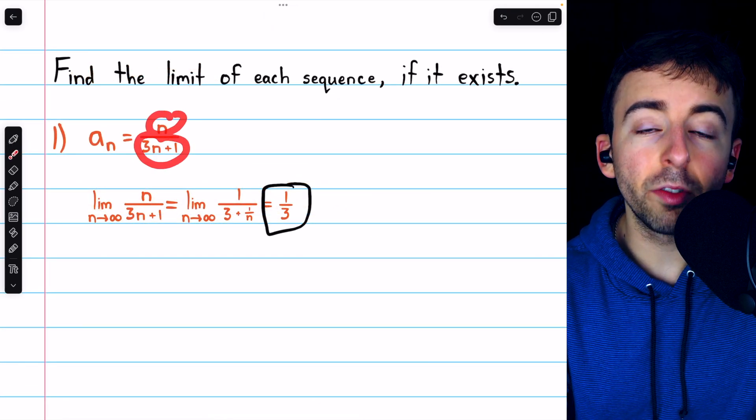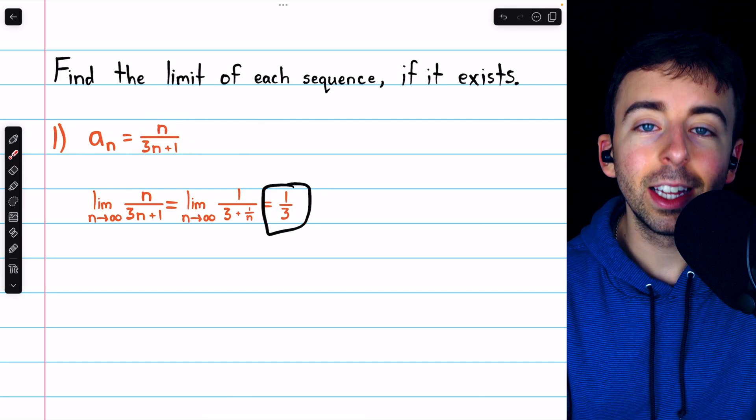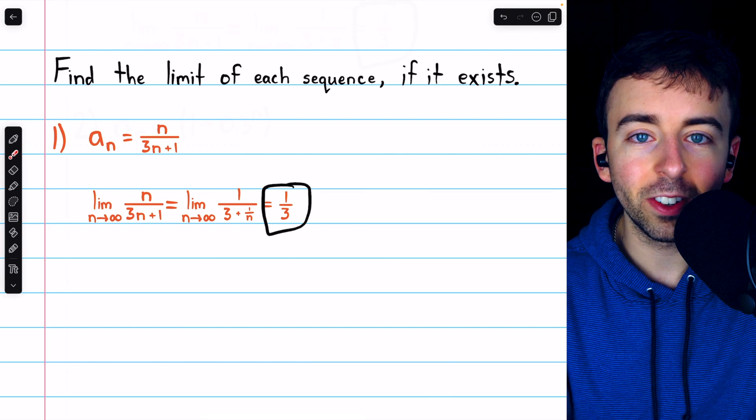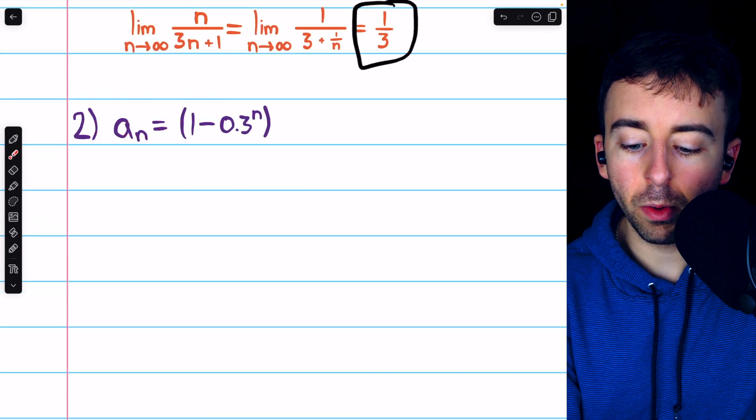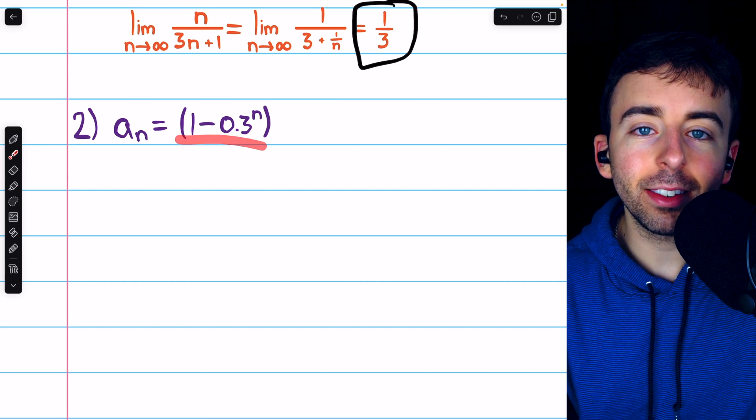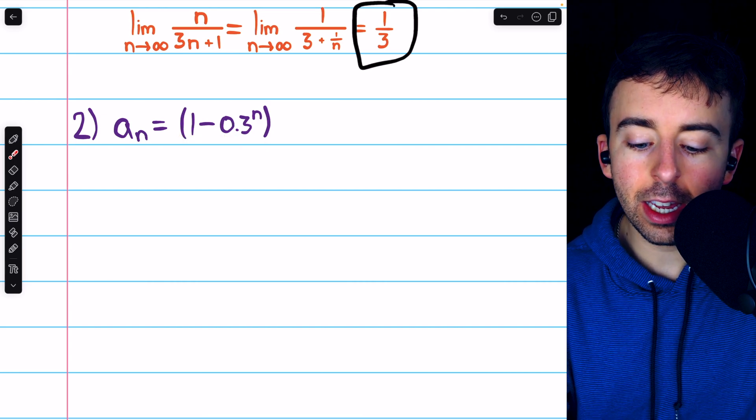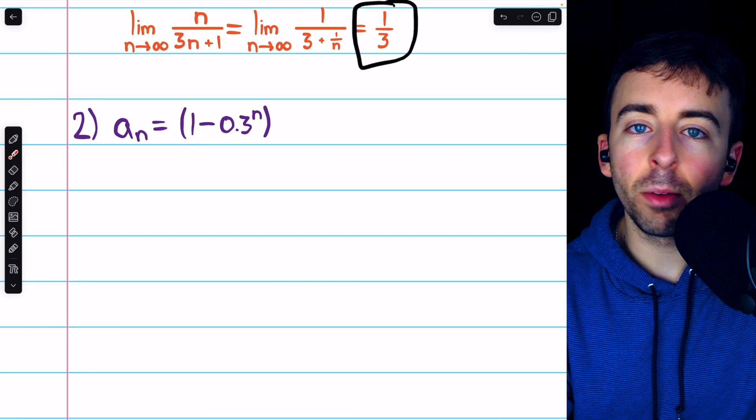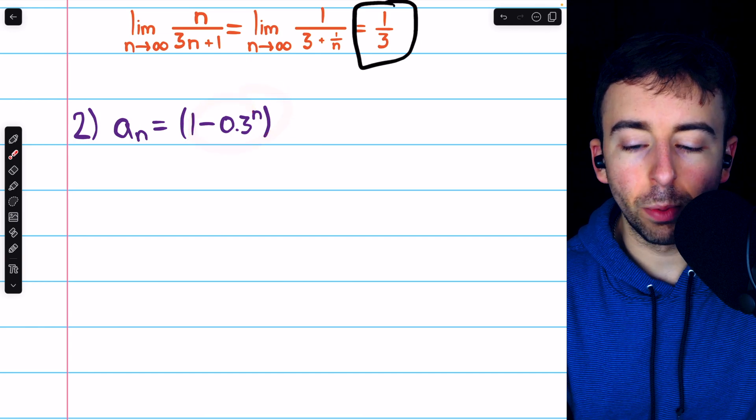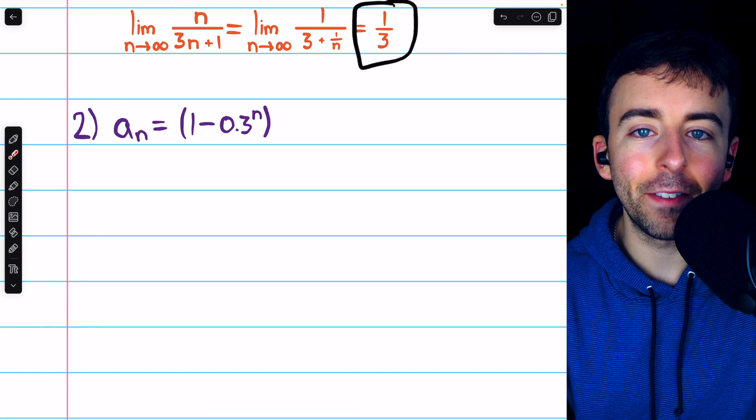Again, if you have a ratio of polynomials of the same degree, the limit at infinity is just the ratio of the leading coefficients. Here is our second problem, 1 minus 0.3 to the n. When we take the limit of this as n goes to infinity, the 1 is not affected at all because it doesn't have an n. All we really have to worry about is that 0.3 to the power of n.